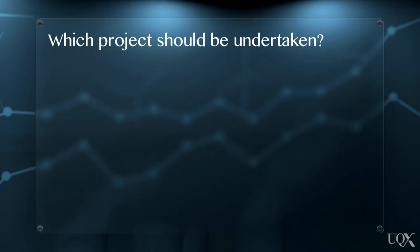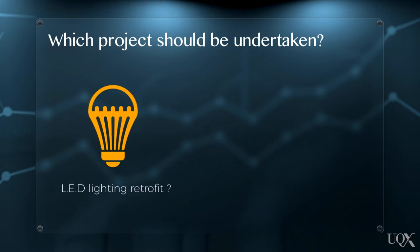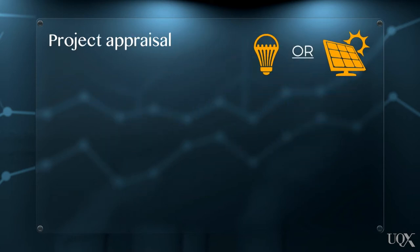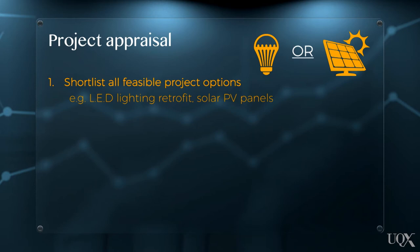Say, for example, an organisation is considering undertaking either an LED lighting retrofit or a solar PV project. The project appraisal process would involve, firstly, shortlisting all carbon abatement project options that the organisation could feasibly implement – in this case, the LED lighting and solar PV projects.